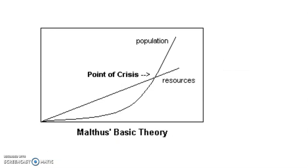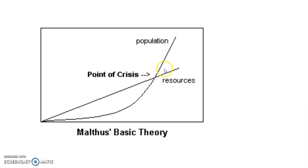This graph represents Malthus' theory. You can see population growing exponentially, which rapidly becomes compounded growth. Food and resources are shown growing linearly. He calls the point where population outpaces food and resource production his 'point of crisis,' where there will be an upheaval and war over resources and food because people need both to survive.